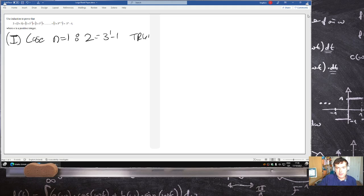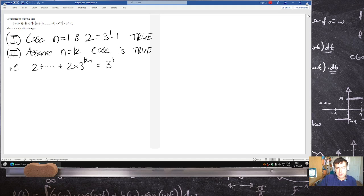We assume n equals k case is true, i.e., 2 plus all the way up to 2 times 3 to the k minus 1 equals 3 to the k minus 1.